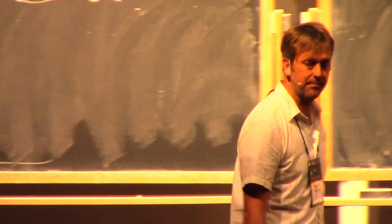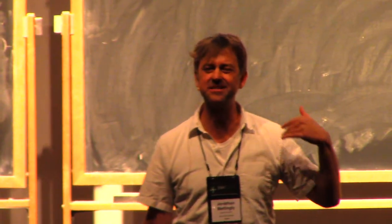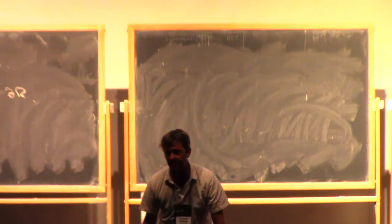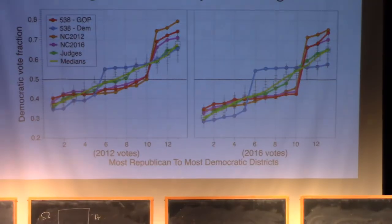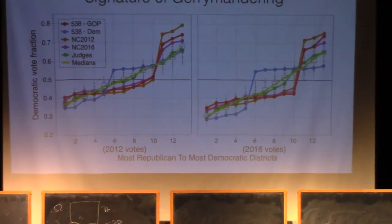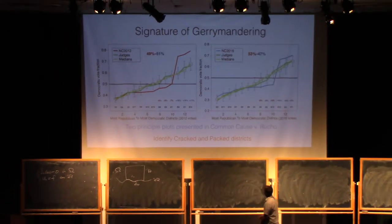Here are two other maps from 538. One of them tried to make it as most Republican as possible, and the other tried to make it as most Democrat as possible. They both have jumps — the jump is just in a different place. That levelness and this large jump — that's really kind of the thing.